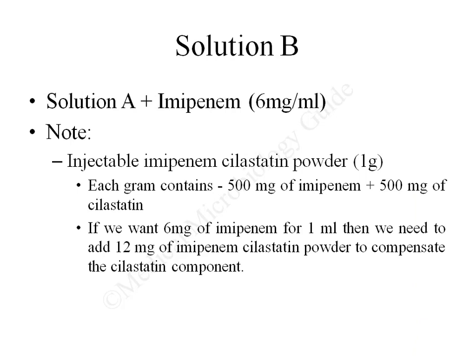Solution B is prepared by adding 1 ml of Solution A with 6 mg of imipenem powder. CLSI recommends standard-grade imipenem powder, which is costly. As an alternative, imipenem-cilastatin injectable powder available in hospitals can be used. Each vial contains 1 gram — 500 mg imipenem and 500 mg cilastatin. Therefore, to obtain 6 mg of imipenem for 1 ml of Solution B, weigh 12 mg of imipenem-cilastatin powder to compensate for the cilastatin component.